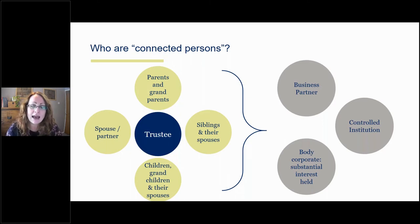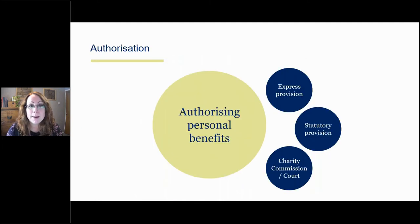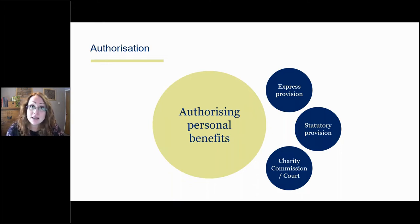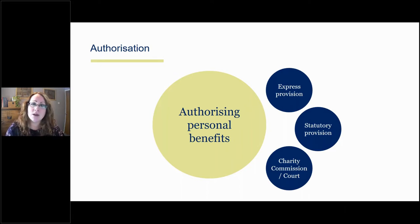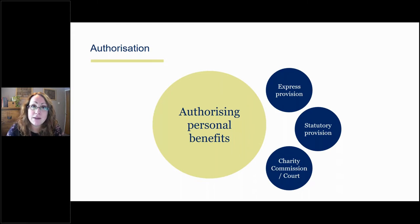Now we know what we're talking about — any kind of personal benefit to yourself and persons connected with you. If you know you've got a situation where there's a personal benefit, how do you obtain authorisation? Broadly speaking, there are three ways. The first is an express provision in the governing documents of your charity. If you have an express provision that permits that particular benefit, then it is authorised. It doesn't mean you can just do it without managing the conflict, but this is just about whether or not you are authorised to obtain and receive that benefit you've identified.